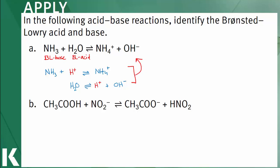In problem B, acetic acid will donate a proton to become acetate, so acetic acid is my Bronsted-Lowry acid. Nitrogen dioxide is accepting a proton to become nitrous acid, so nitrogen dioxide is my Bronsted-Lowry base.